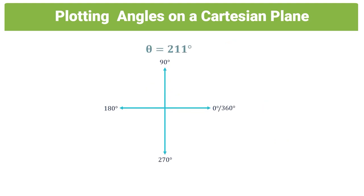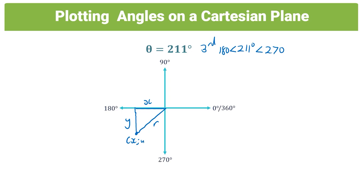For the final plotting example, 211° resides in the third quadrant (between 180° and 270°). We plot a point in the third quadrant and draw our vertical, hypotenuse, and horizontal lines for x, y, and r. The angle theta always starts at the positive x-axis and goes all the way around anti-clockwise to the radius.